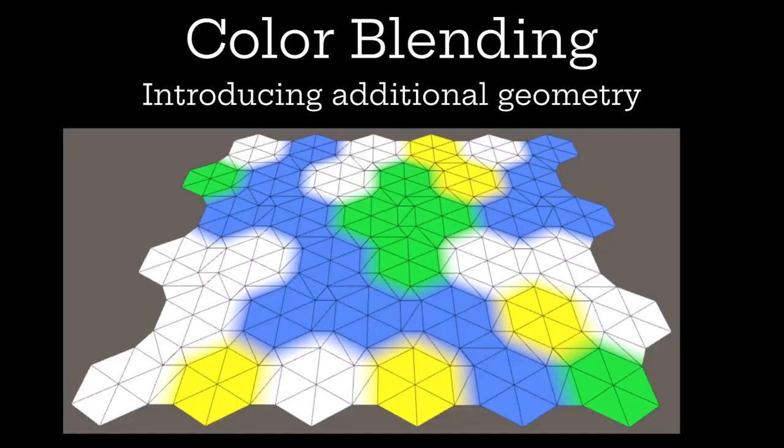The next thing we can do is color blending. The geometry changes a little bit at this step after we include some additional geometry. Essentially, what we're doing is shrinking the pizza a little bit and then adding a bridge in between one hex and another hex, and then we have a triangle between all three hexes. We'll use these bridges and triangles later to calculate stuff like neighbors and do some cool blending between different textures.